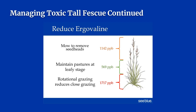Another way to reduce the effects of fescue toxicosis is to employ a combination of pasture renovation and grazing control. For example, if you have four pastures with infected tall fescue, renovate one of them with a novel endophyte tall fescue variety or even another type of grass altogether. This strategy will allow you to graze broodmares on the toxic fields during the first two trimesters of pregnancy, then move them to the renovated field during the last trimester to avoid acute fescue toxicosis. For cattle, let them graze only novel tall fescue a month before, during, and a month after the breeding season to avoid the effects of toxicosis and reduce pregnancy rate losses.